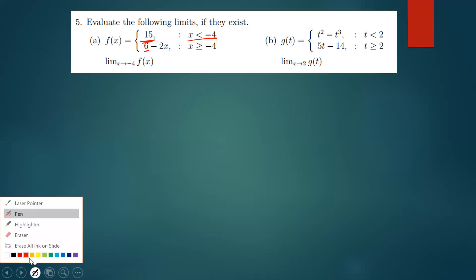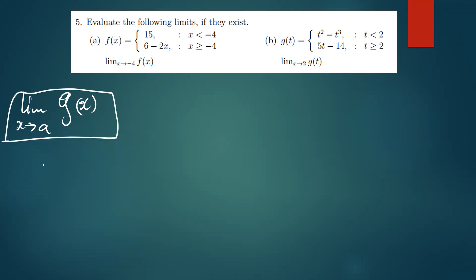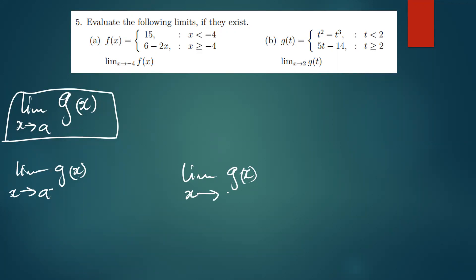Remember, when you're trying to determine whether a limit exists or not, you have to make sure — for instance, if you have the limit of g(x) as x approaches some number a — you need to find the limit of that function on the left, meaning x approaching a from the negative side, and also on the right, meaning x approaching a from the positive side. If you discover that the left-side limit equals the right-side limit, then the limit of g(x) as x approaches a exists.